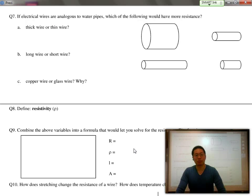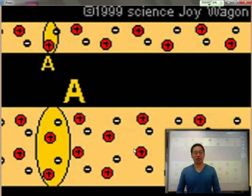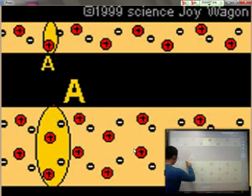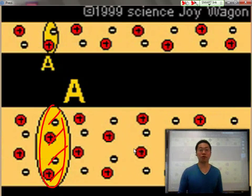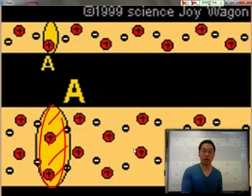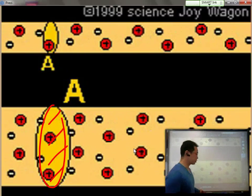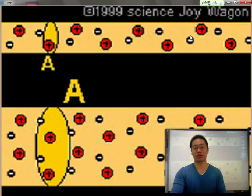The best way to think about this is if electrical wires are analogous to water pipes, which of the following would have more resistance? If you think about it, a thicker wire with a larger cross-sectional area would allow for the passage of more electrons to squeeze through all those protons, all those atoms, than a smaller cross-sectional area.